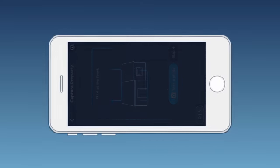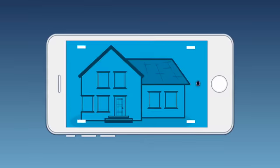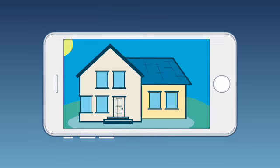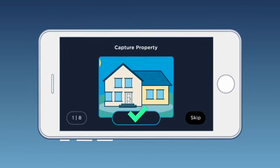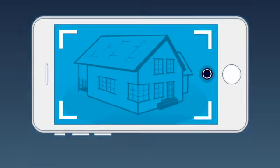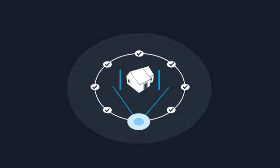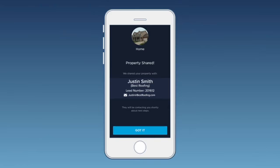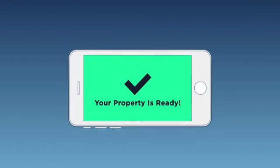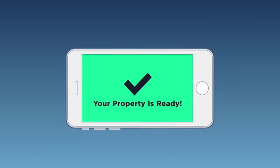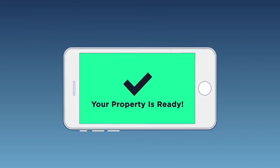Hover will show you how to orient the camera as you take photos of your property. Simply follow the guide to capture each face and corner of your property. After you've taken eight photos, your property will automatically be shared with your contractor or insurance carrier. You will receive an email and mobile notification when your 3D model is ready.